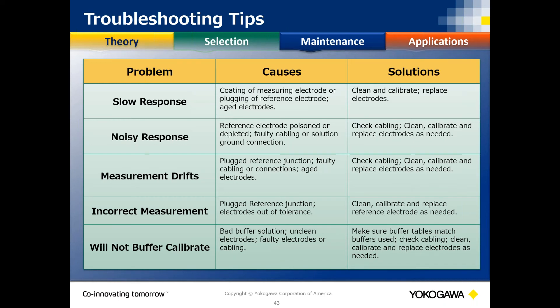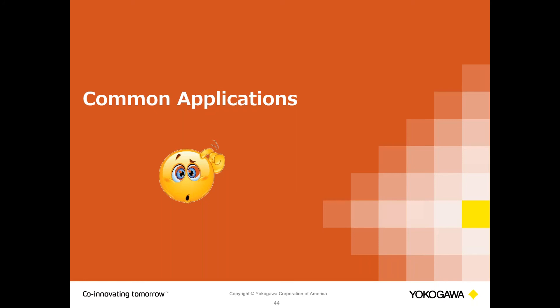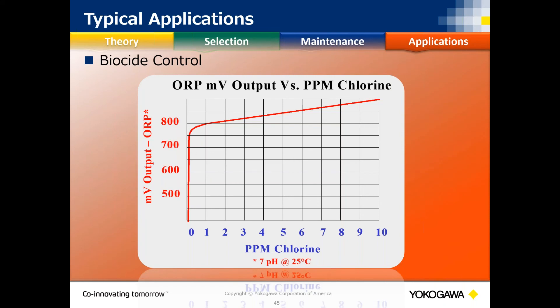A troubleshooting quick guide will be included in the handouts for ORP troubleshooting tips. If you're seeing slow responses, these are the recommendations for what to look at — it doesn't matter whose equipment you're using. We're now at the 30-minute mark, so let's go over some common applications.